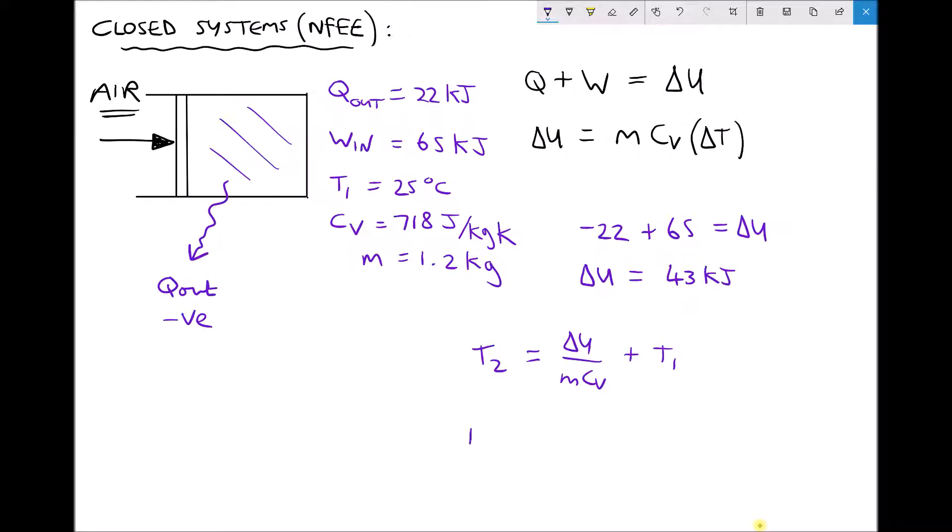In this instance, we have T2 equals 43 kilojoules, so 43,000, divided by our mass of 1.2 times our specific heat capacity at constant volume 718, plus T1, 25 degrees, giving us a T2 value this time equal to 74.91 degrees Celsius.